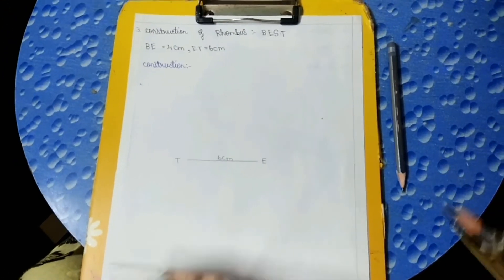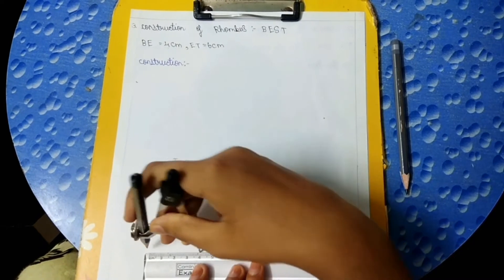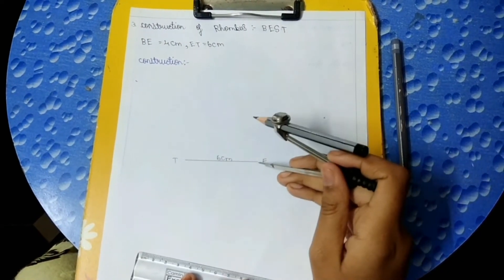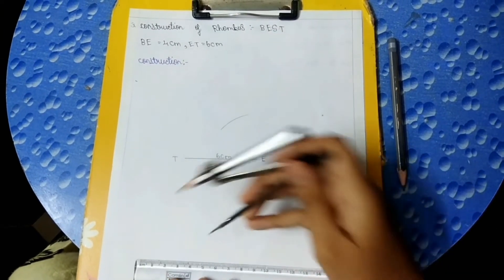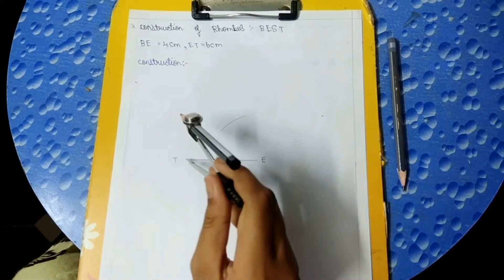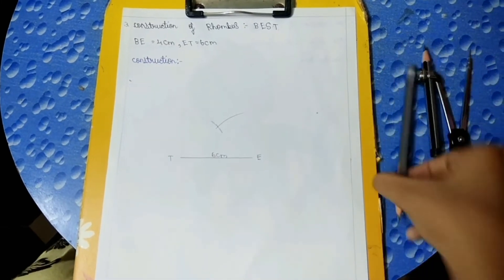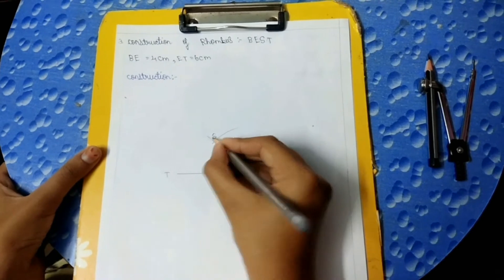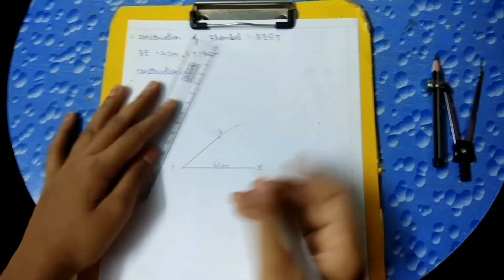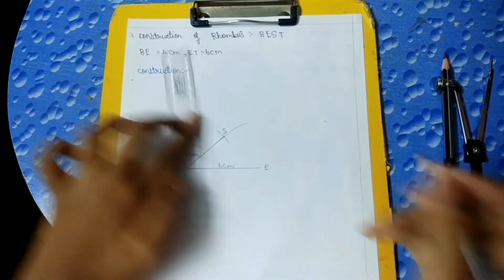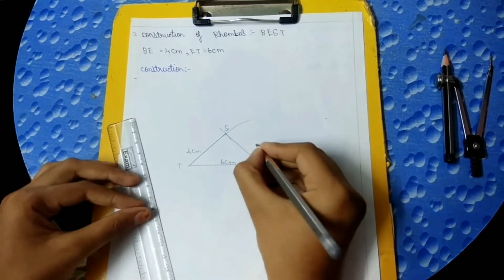Now with the help of the compass, we should take 4 cm and keep it on point E and draw an arc. Then take 4 cm again and keep it on point T and draw an arc. Now this point is known as S. We should draw a line from T to S of 4 cm and a line from S to E of 4 cm.